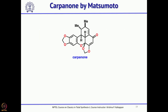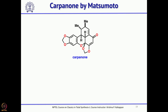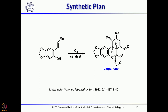The second synthesis of carpanone I will discuss is Matsumoto's synthesis. He also used the same intermediate; the only difference is that while Chapman used palladium, Matsumoto used a Schiff base complex. This gave the natural product directly — not only did the oxidative coupling take place, but also the Diels-Alder reaction. He started from the phenol already reported by Chapman, and used molecular oxygen in the presence of a cobalt(II) Schiff base catalyst, giving carpanone directly in one step.